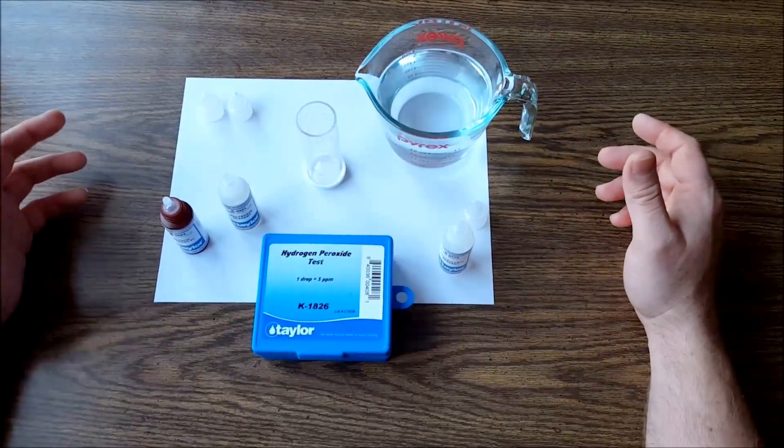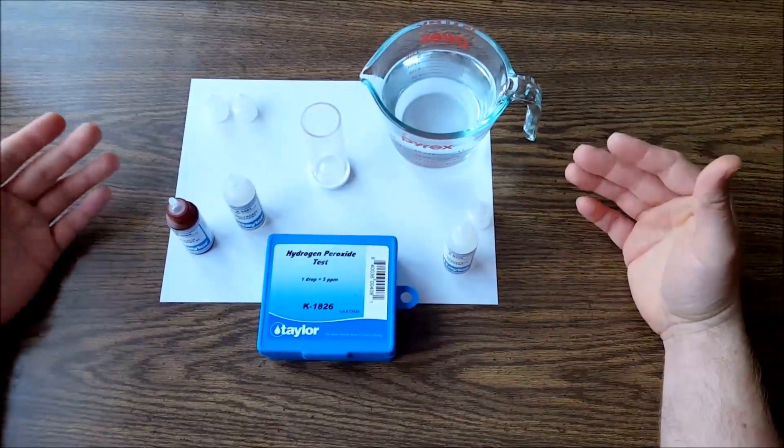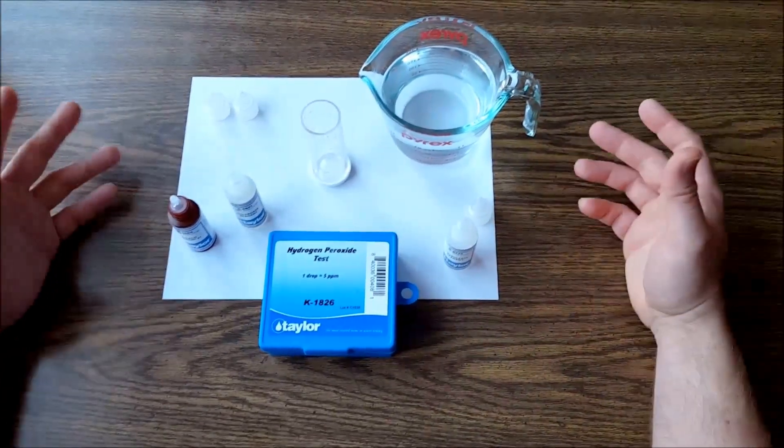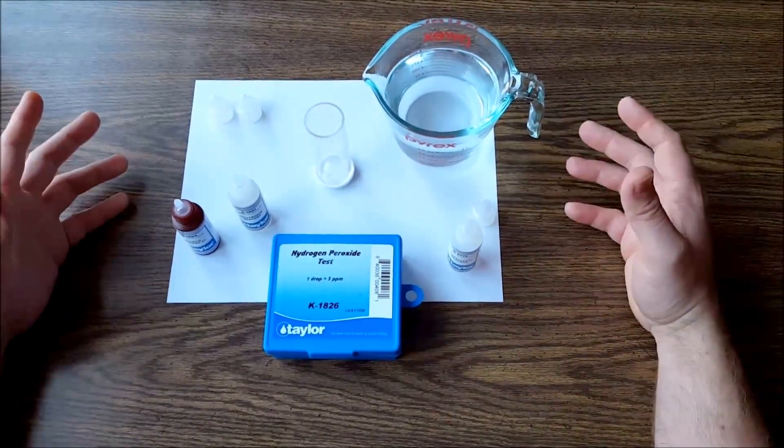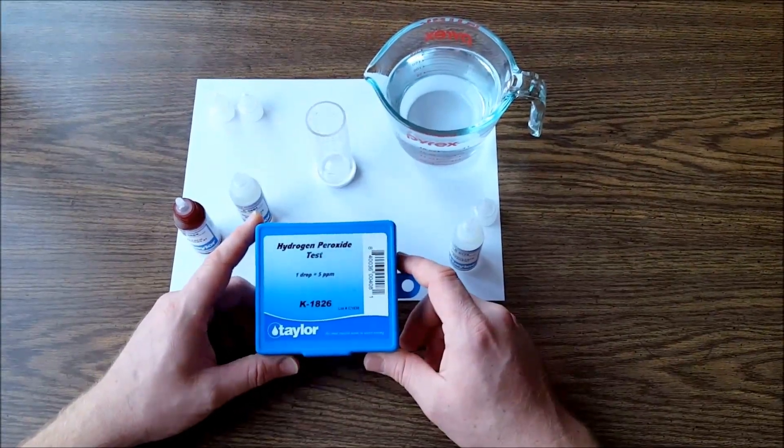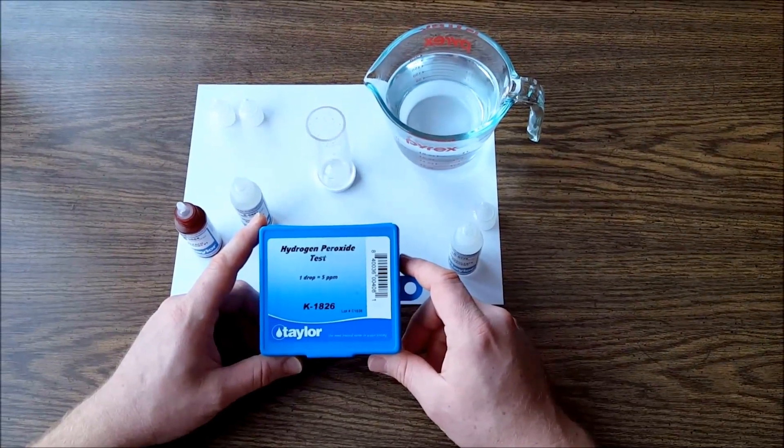If you're using hydrogen peroxide inside of your float tank, you're gonna have to have some means to measure how much hydrogen peroxide is inside your float tank. With parts per million, there's test strips out there but they're not accurate. However, this Taylor kit right here, the k1826, is accurate for float tanks.